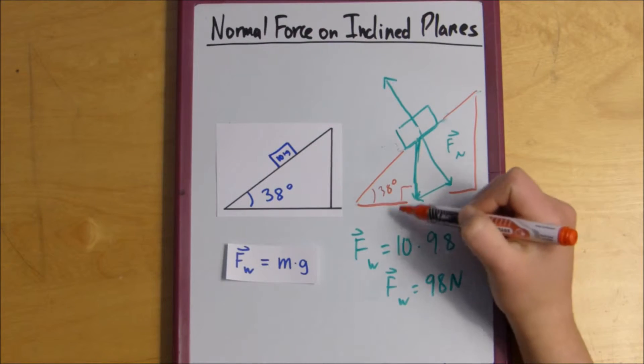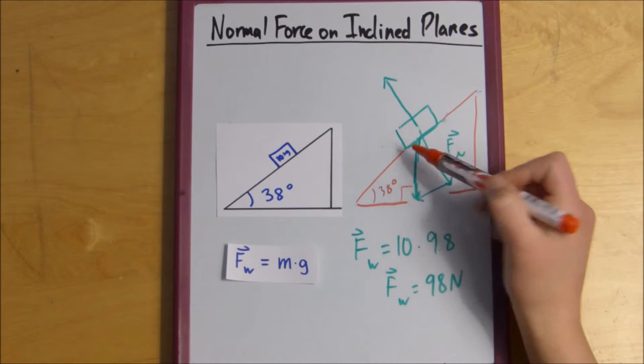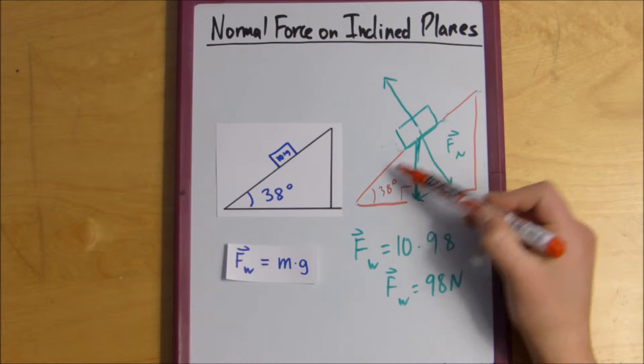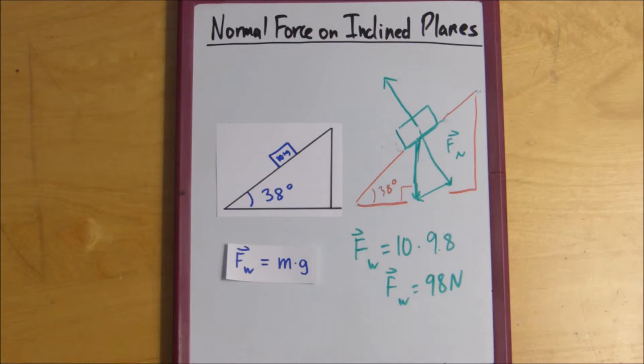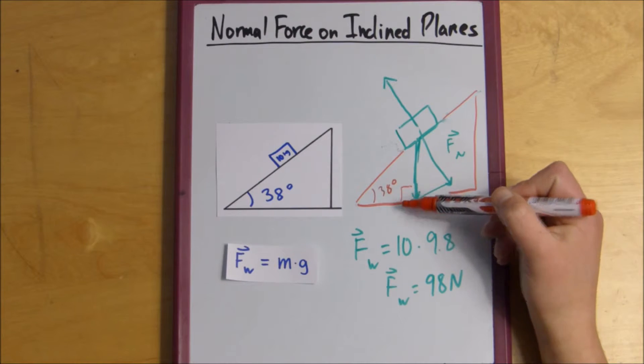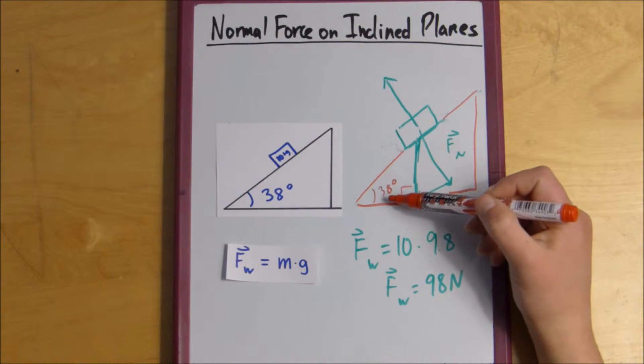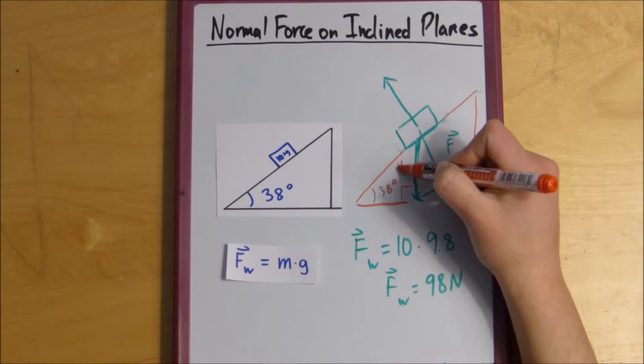Do you see the triangle right here? The little triangle? So we know that every triangle has 180 degrees. So 180 minus 90 is 90. And 90 minus 38 is 42 degrees. So that's what this angle is.